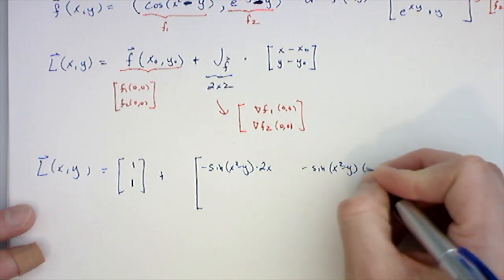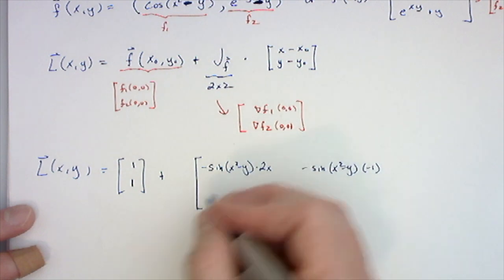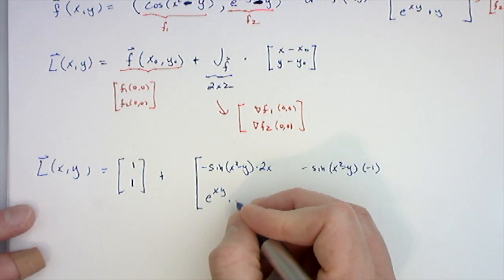Then the next row: the partials of this. The derivative of e^(xy) is e^(xy) times the derivative of xy with respect to x, which is just y, minus the derivative of y which is 0.